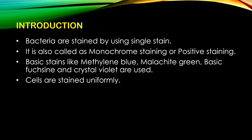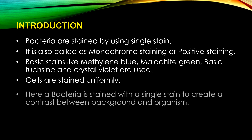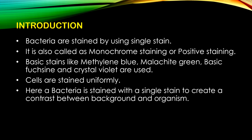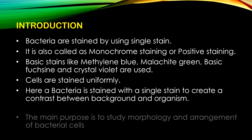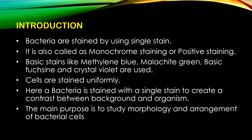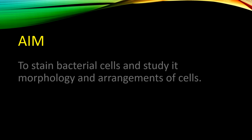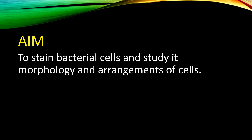In simple staining, cells are stained uniformly — the whole cell gets stained uniformly, not any particular part. A bacterium is stained with a single stain to create contrast between the background and the organism. The main purpose is to study the morphology and arrangement of bacterial cells. The aim of the experiment is to stain bacterial cells and study their morphology and arrangement.